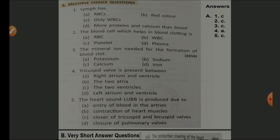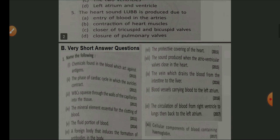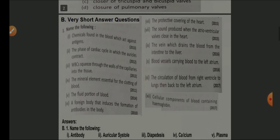The 'lub' sound is produced due to — options: entry of blood in arteries, contraction of heart muscles, closure of tricuspid and bicuspid valves, closure of pulmonary valves. The answer is option C: closure of tricuspid and bicuspid valves, also known as AV valves. Now let us move on to very short answer questions.